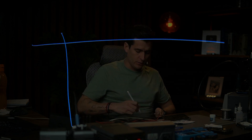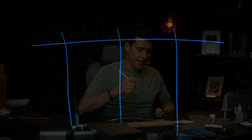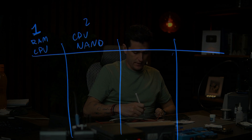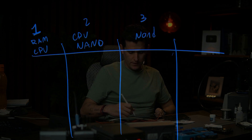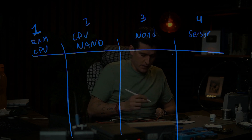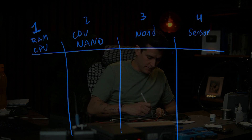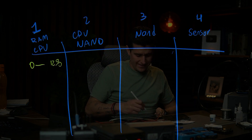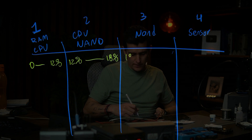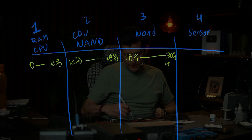When we are doing the restore, we have four stages. Stage 1: RAM and CPU. Stage 2: CPU and NAND. Stage 3: NAND. Stage 4: sensors. In 3uTools we have: 0–2%, then 12–80%, then 80–45%, and 45–100%.